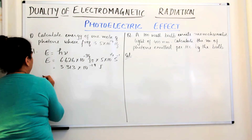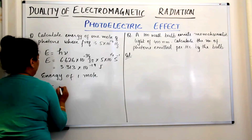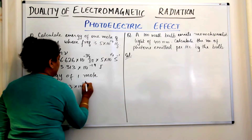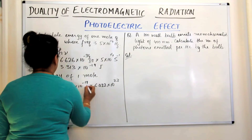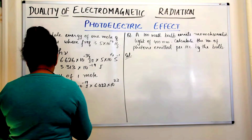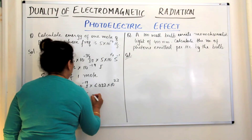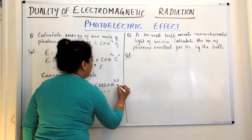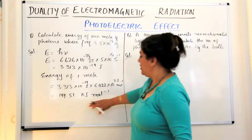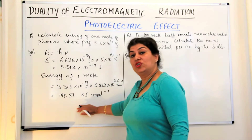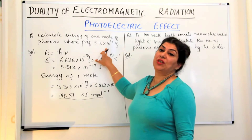This is the energy of 1 photon. So the energy of 1 mole would be equal to 3.313 into 10 to the power minus 19 joules into Avogadro's number, which is 6.022 into 10 to the power 23. When you calculate this, it comes to be equal to 199.51 kilojoules per mole. That is the energy for one mole of photons whose frequency is 5 into 10 to the power 14 Hertz.